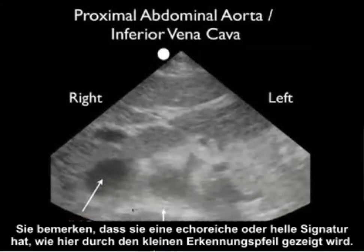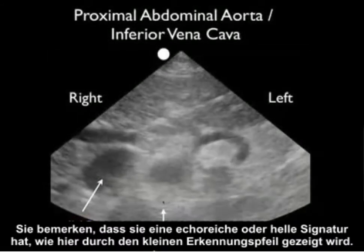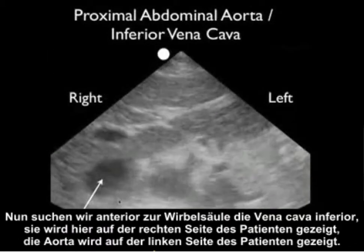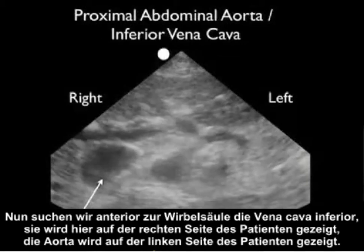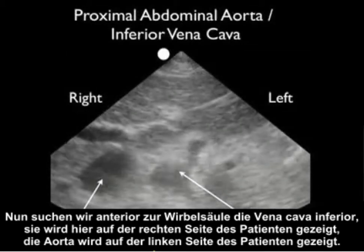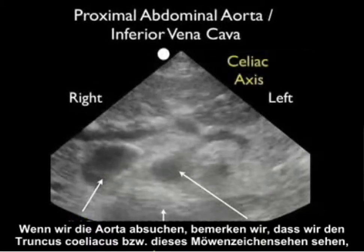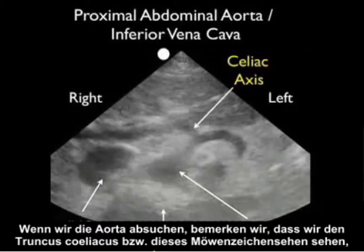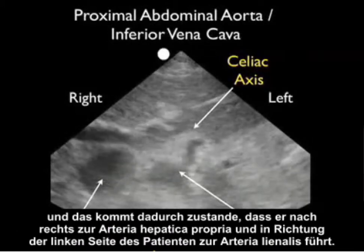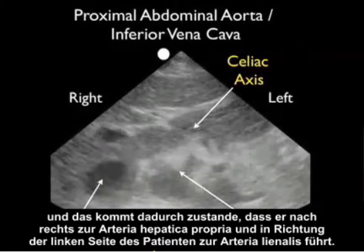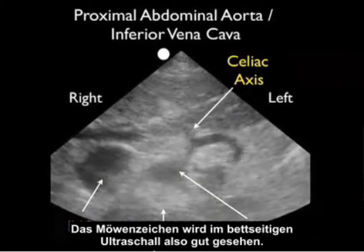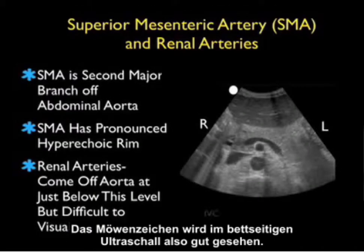Notice the spine has a hyperechoic or bright signature, as shown by the small indicator arrow. We'll be looking just anterior to the spine for the IVC, shown here to the patient's right, and the aorta, shown to the patient's left side. Notice as we scan through the aorta, we see the celiac axis — or the seagull sign — coming off, made up of the hepatic artery going to the right side, and to the patient's left, the splenic artery. So the seagull sign is well seen on bedside ultrasound.